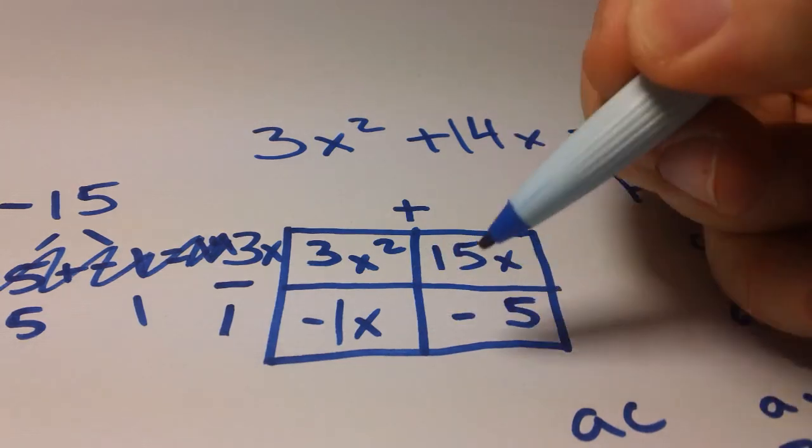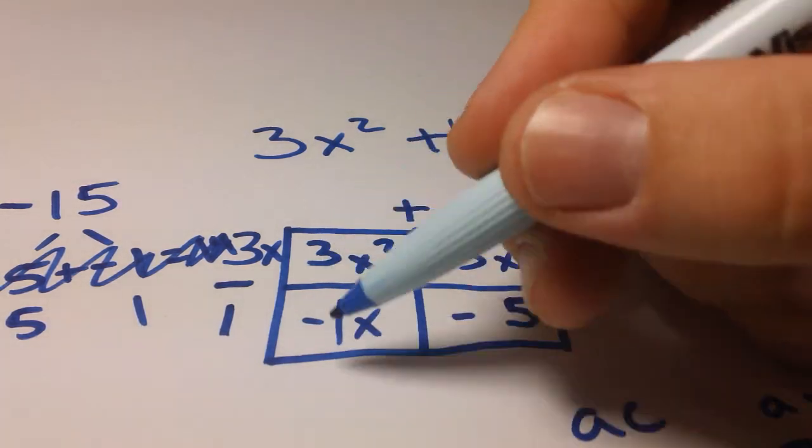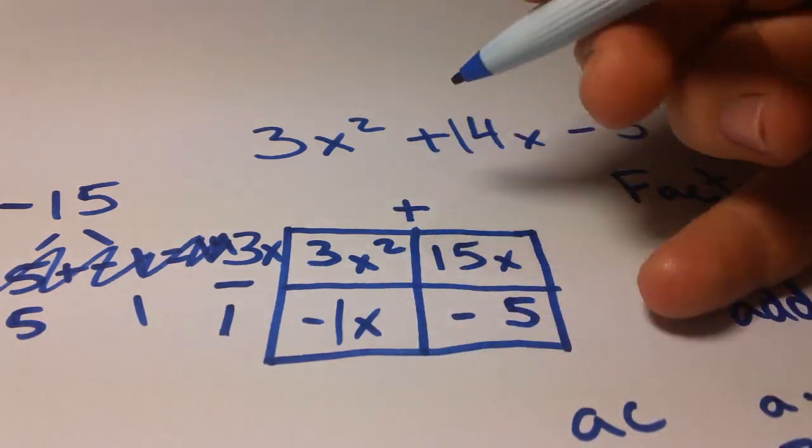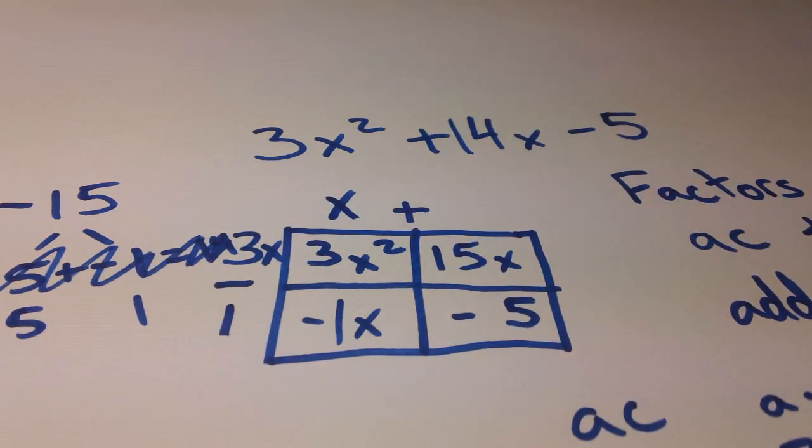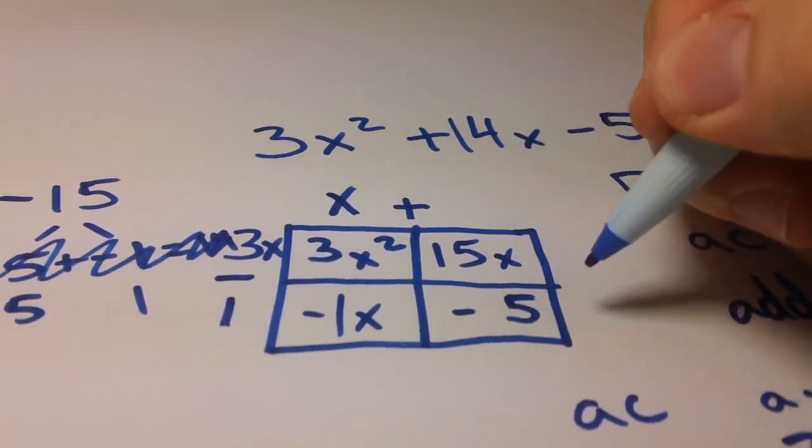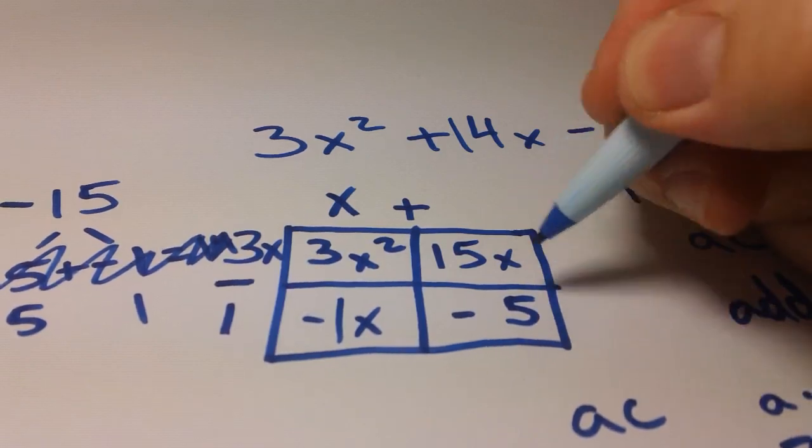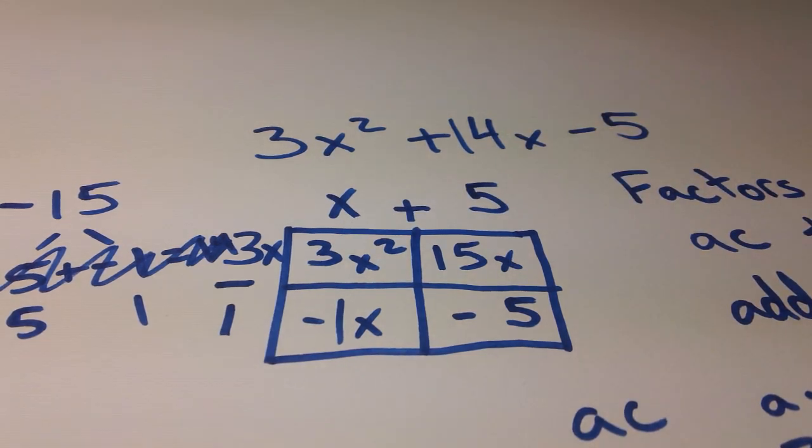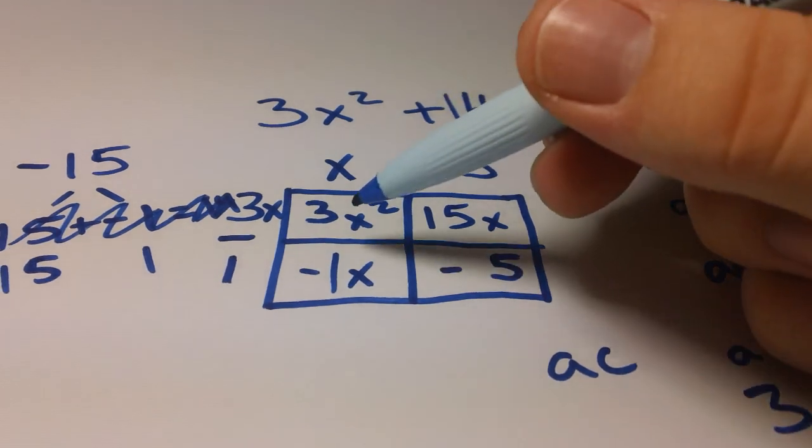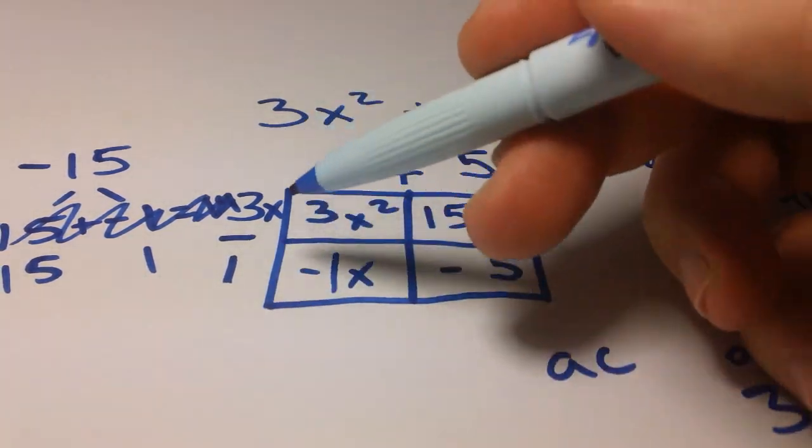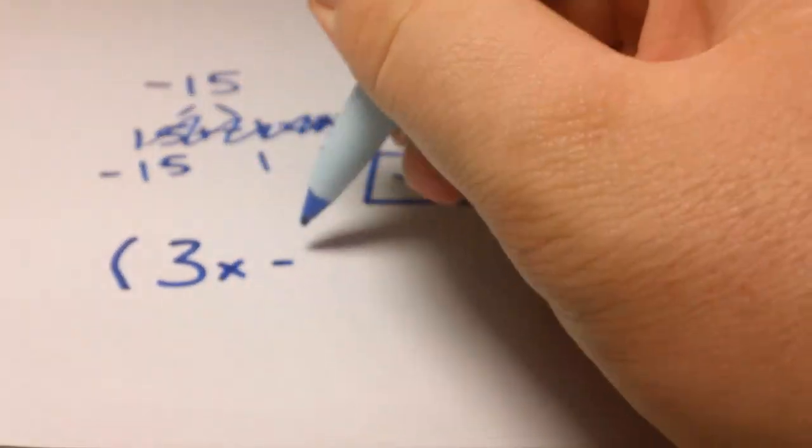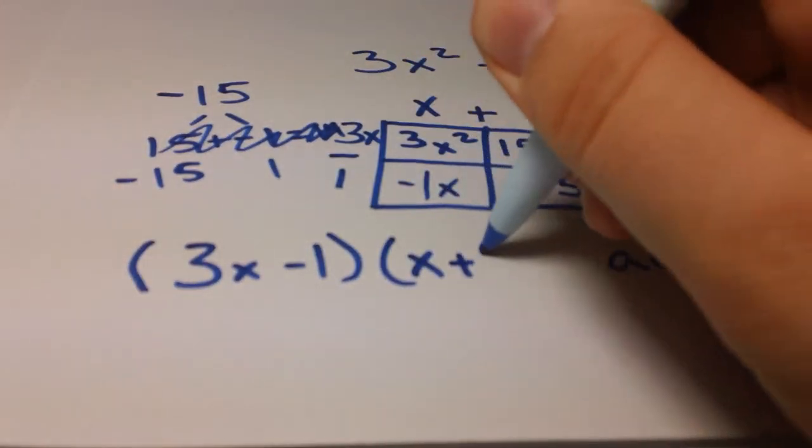Let's look at our first column. 3x squared and negative 1x. Now, yet again, the only number, anytime we have a 1 there, the only number we're going to be able to take out is 1. But, we do have x's in both of these boxes. So, we can take out an x. So, 1x or just x. Our next one, 15x and negative 5. What number can we take out of both of those? Well, to me, it looks like both of those numbers are going to be divisible by 5. So, we're going to write that right up there. Now, right now, we have completed our problem. We have found our two quantities. You write the numbers and variables you have grouped on the top and the side of this box together. Such as 3x minus 1 and x plus 5.